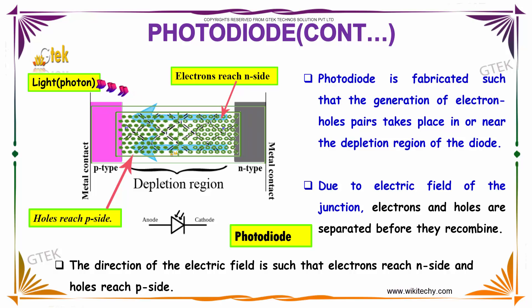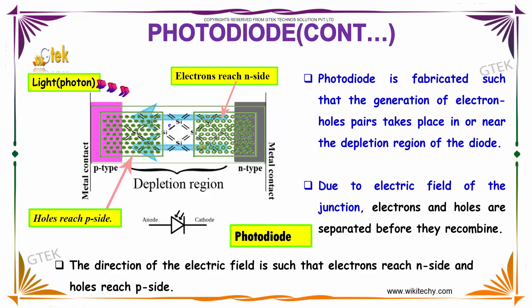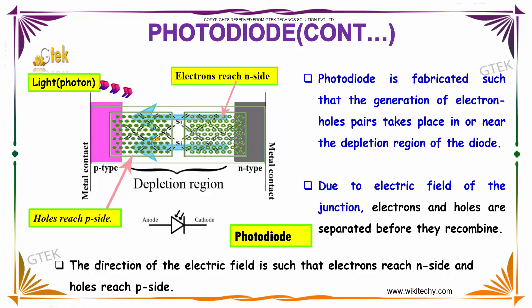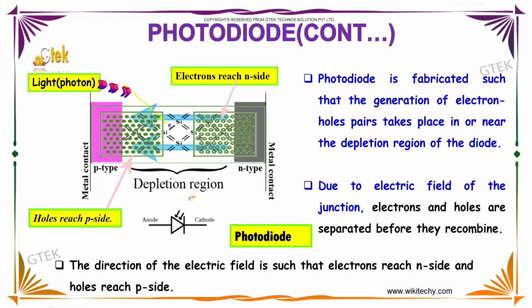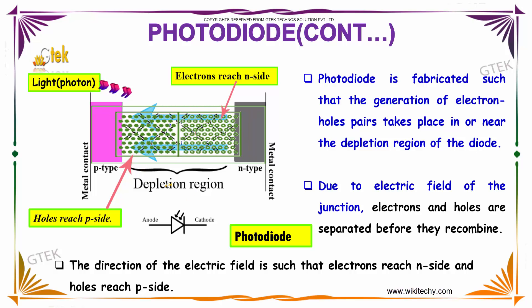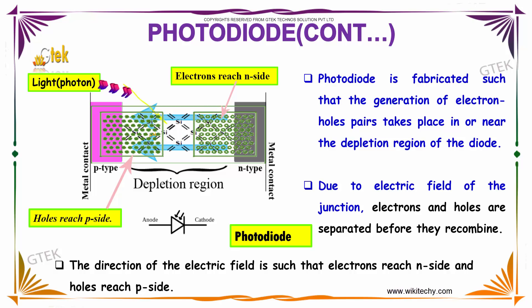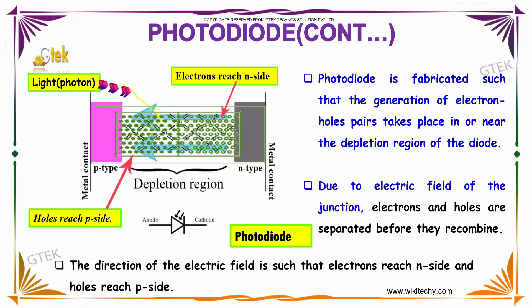Due to the electric field of the junction, electrons and holes are separated before they recombine. The direction of the electric field is such that the electrons reach the N side and holes reach the P side.